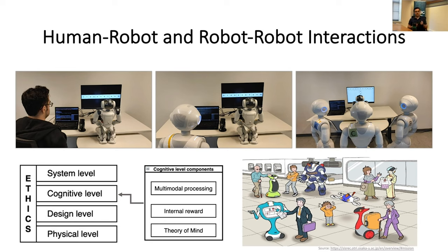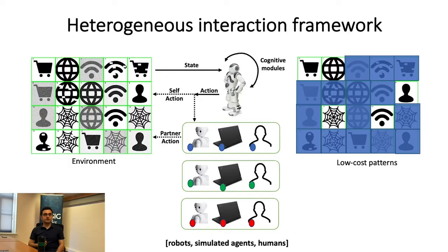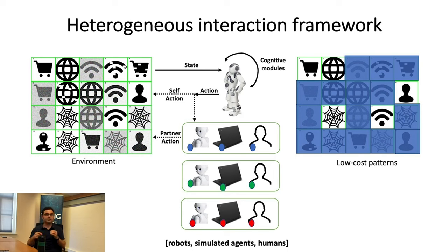At the cognitive level, we currently implement three different sub-components, which I will introduce on the next slide. We first create an interaction framework that requires three different parts. In the first part, you have an agent that should interact with the environment and interaction partners using its cognitive modules.